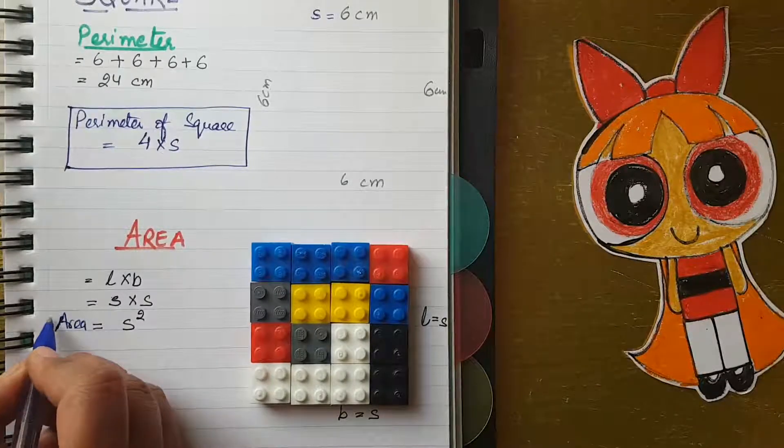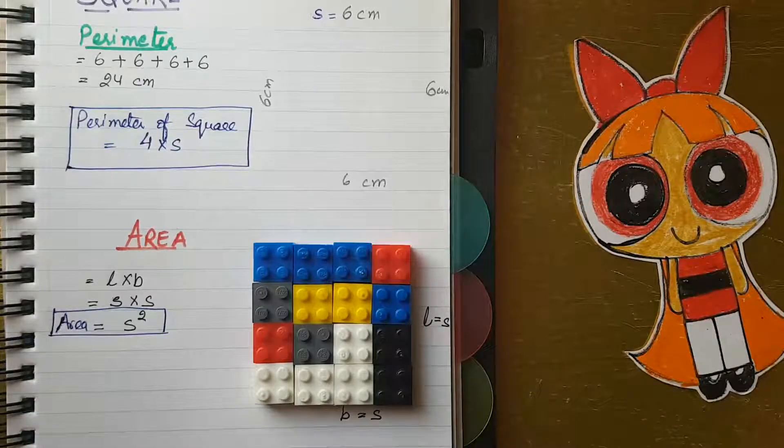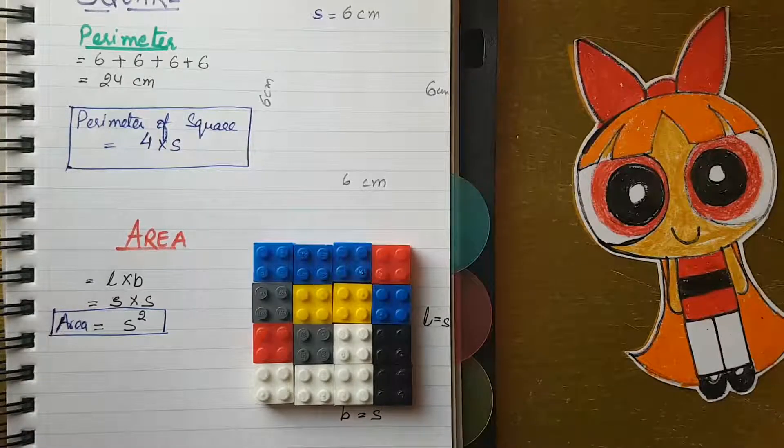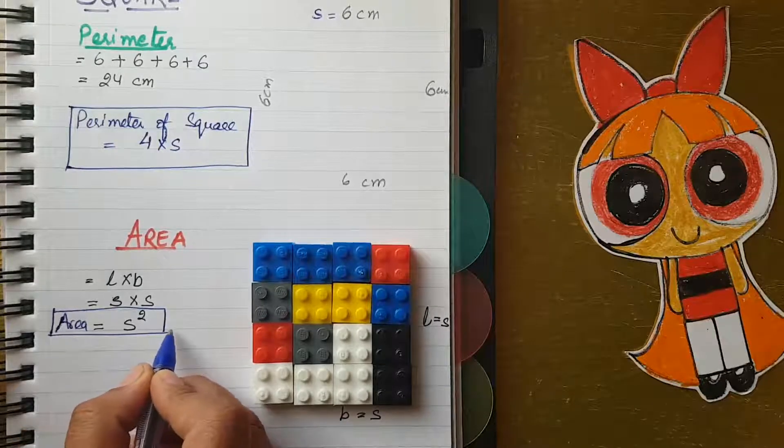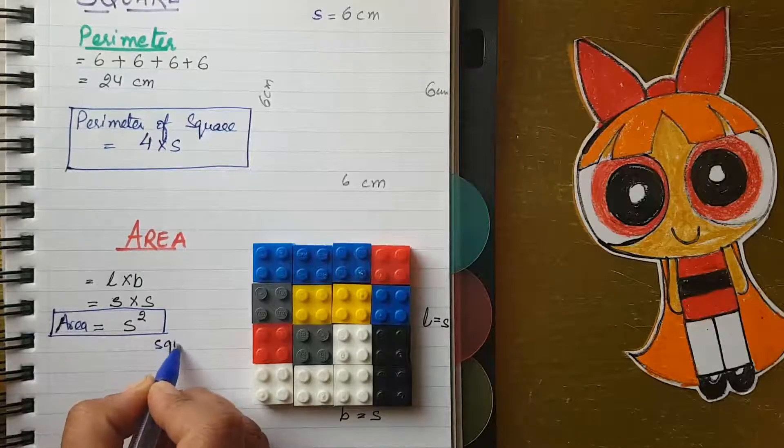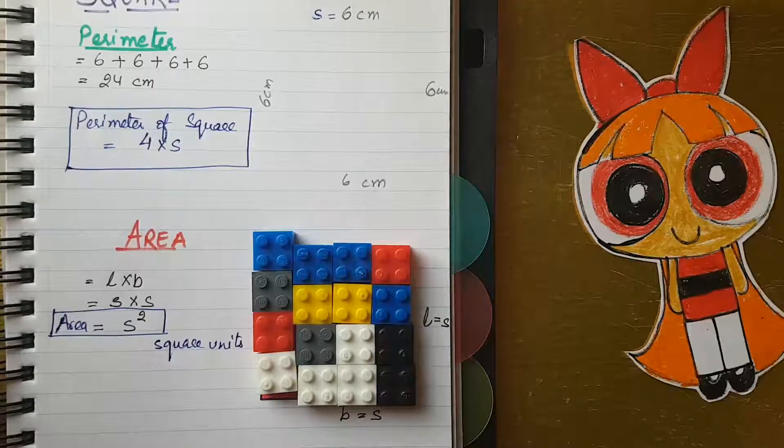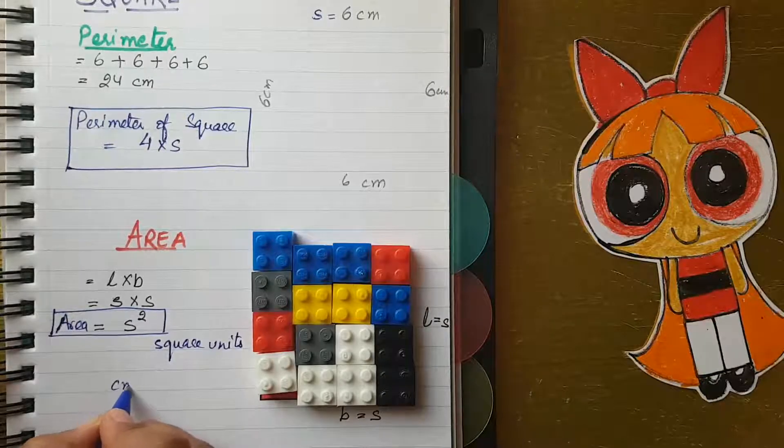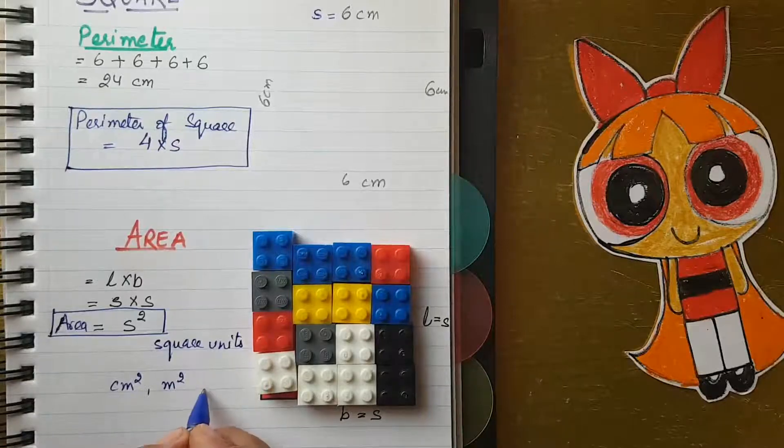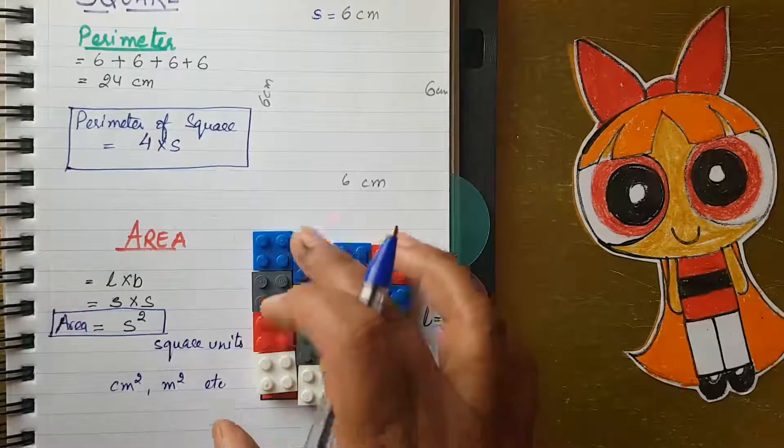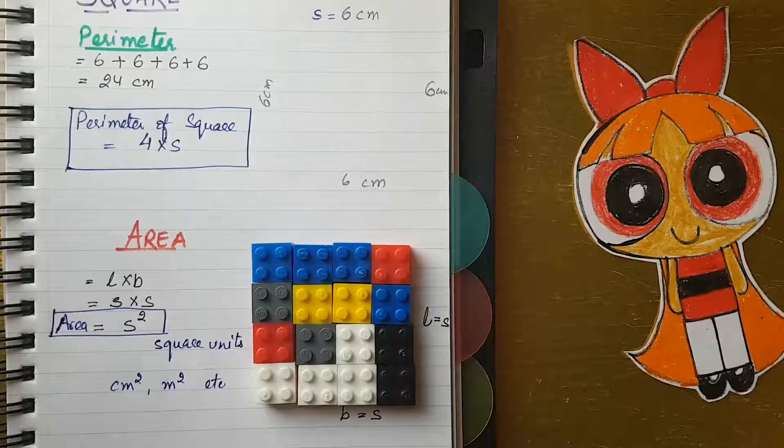This is the formula, s squared, and the measurement is always in square units. The measurement which you have to write is square units. If it is in centimeters, it is centimeter square. If it is a meter, meter square, like that. I hope kids you understand the perimeter and area of the square and your doubt is also clear.